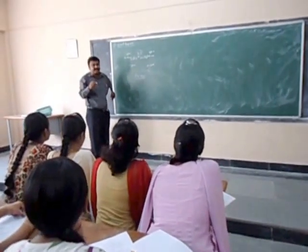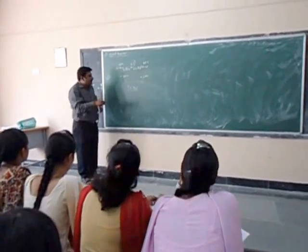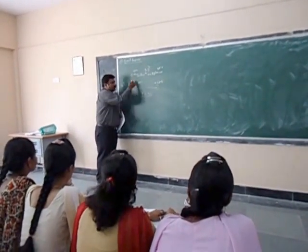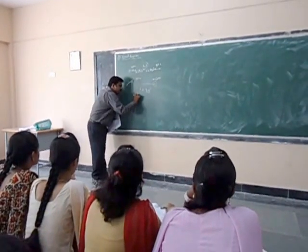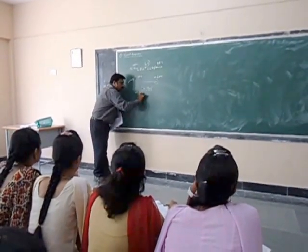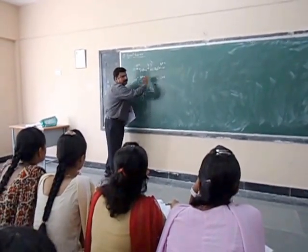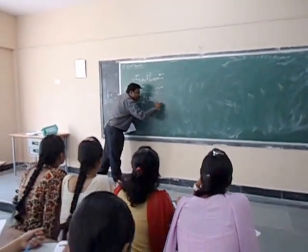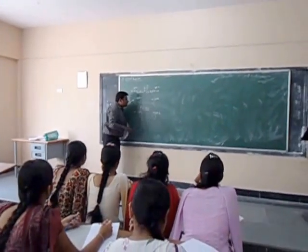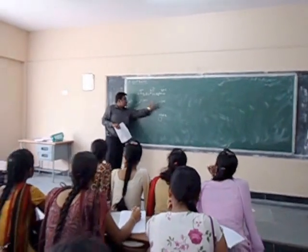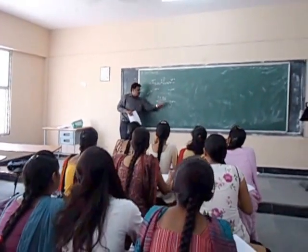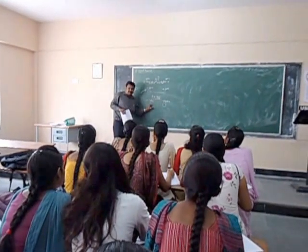If a charge of minus 2 microcoulomb is added to the first charge, it becomes minus 6 microcoulomb. If minus 2 microcoulomb is added to the second charge, it becomes minus 4 microcoulomb. Minus and plus attract — the force is still attractive, but the magnitude remains the same.